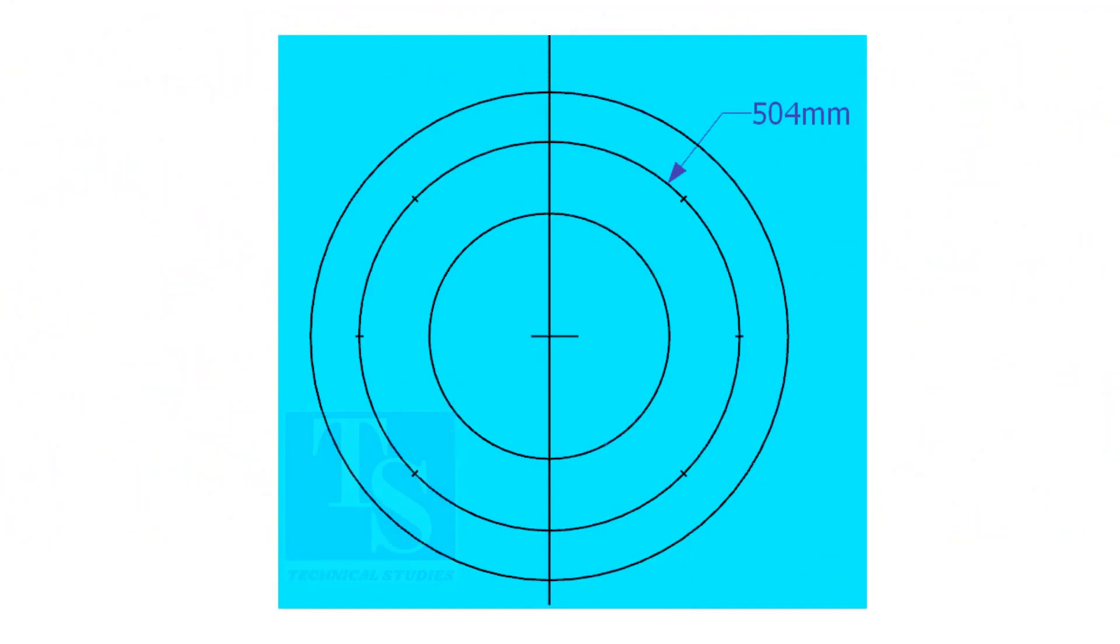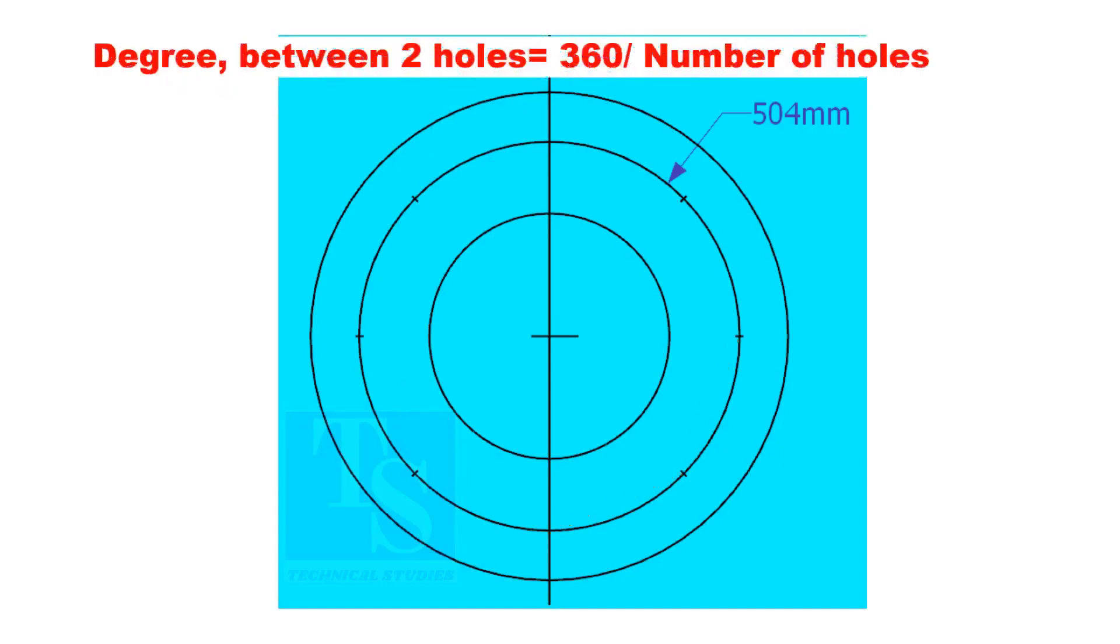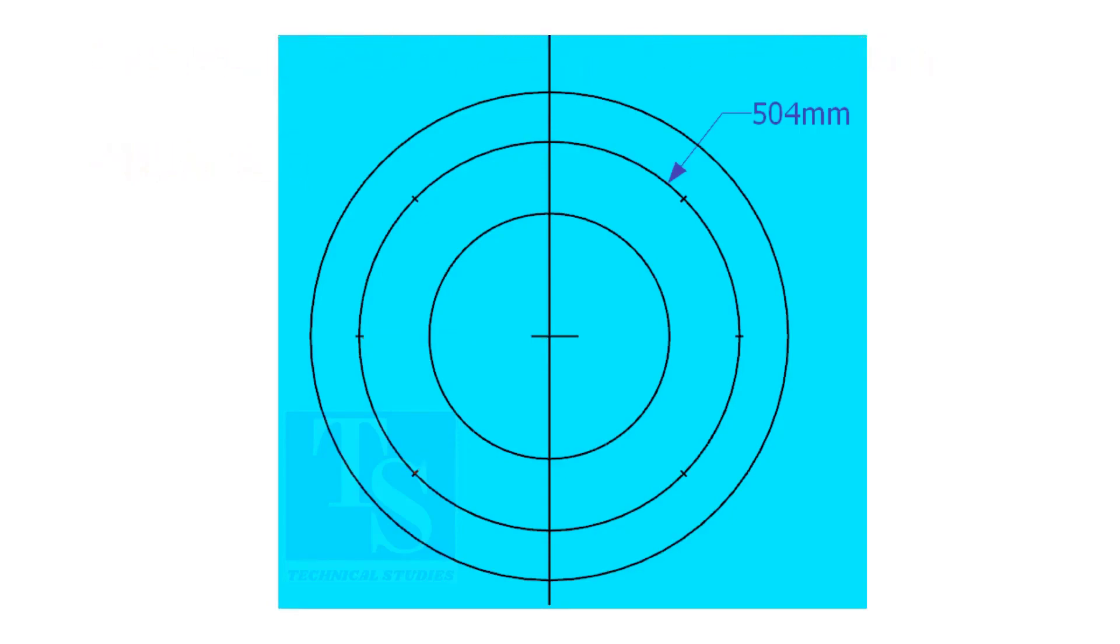To divide the circle easily and accurately, let us find the cord length of the holes. If you divide 360 by the number of holes, you will get the angle between two holes. Cord length equals sine 45 divided by 2, multiplied by PCD.